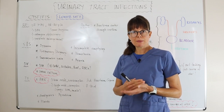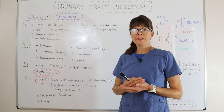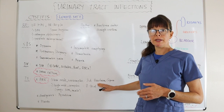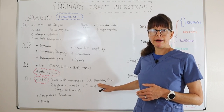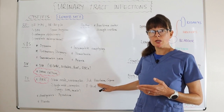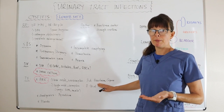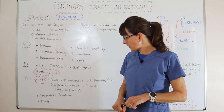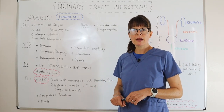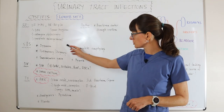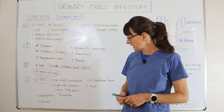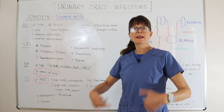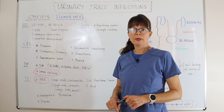When the urine culture comes back in about 48 hours, we want to compare the result to whatever empiric antibiotic the provider prescribed so we can change it if there is resistance — because if the bacteria is resistant, that antibiotic won't help the patient. Other treatments include analgesics. A medication called pyridium is very helpful for soothing the symptoms of dysuria, frequency, and urgency. It's also important to encourage the patient to increase fluid intake to flush out bacteria from the urinary tract.